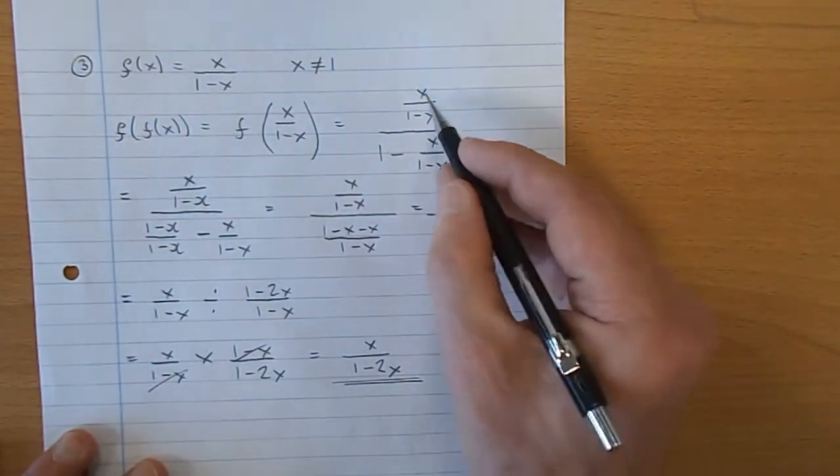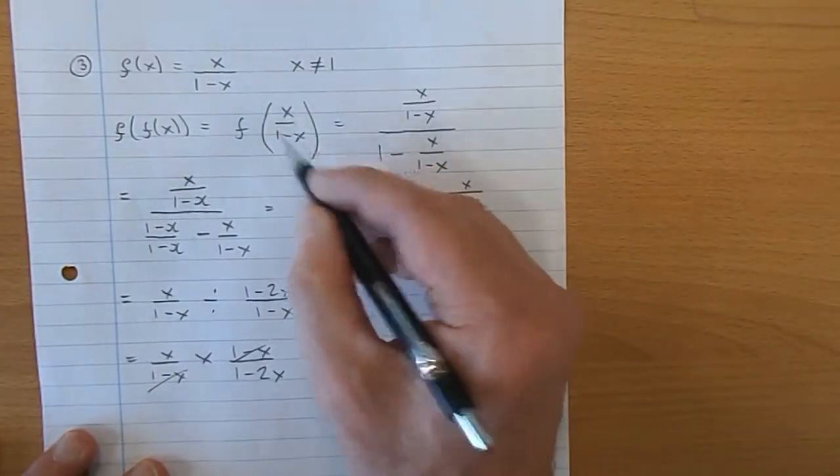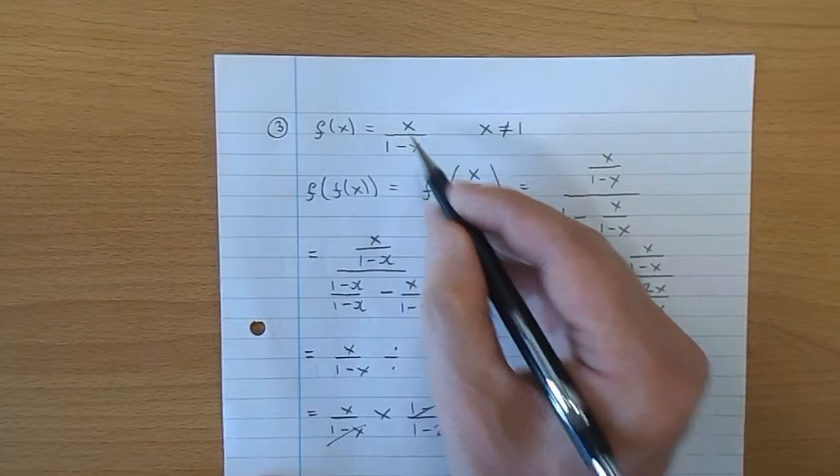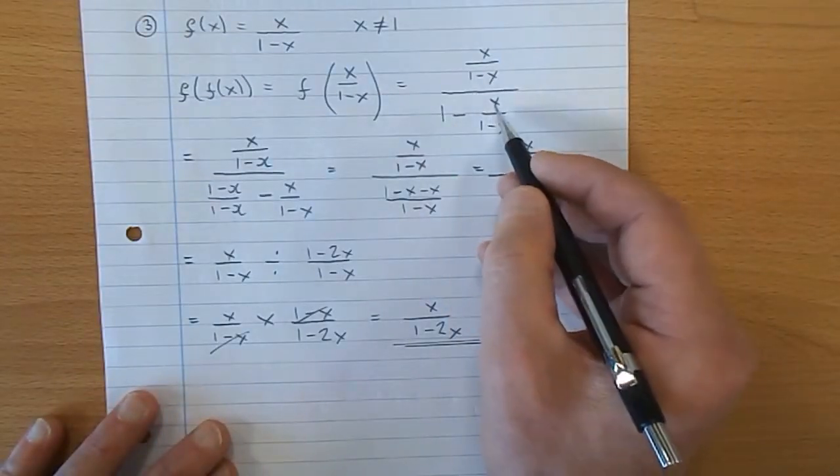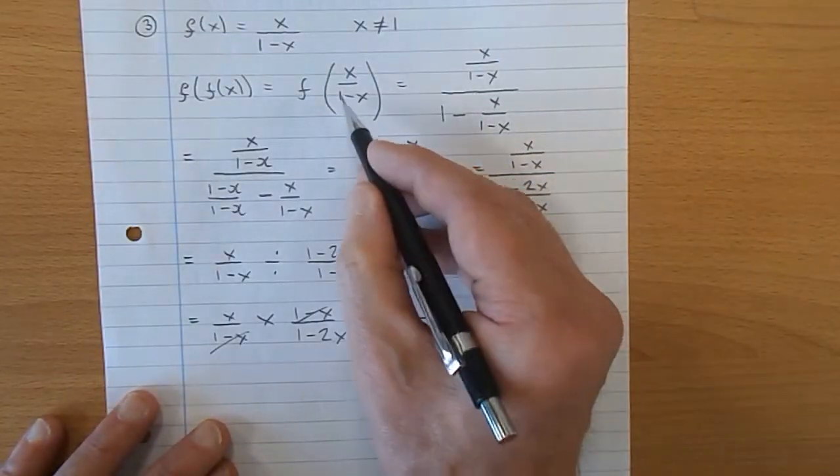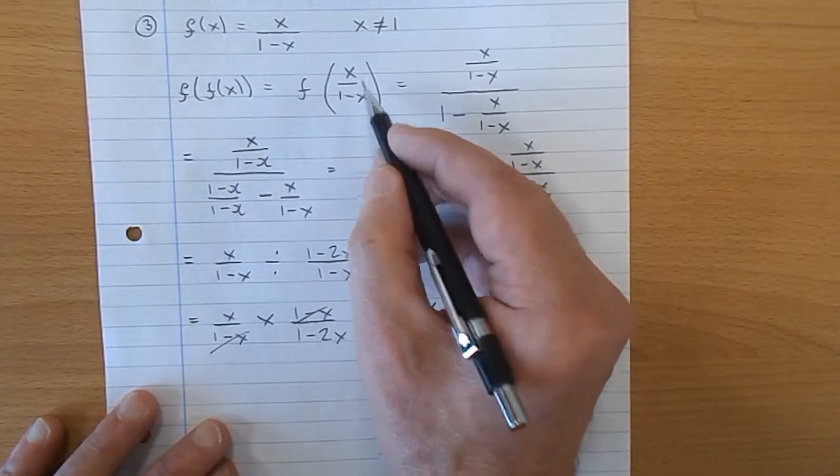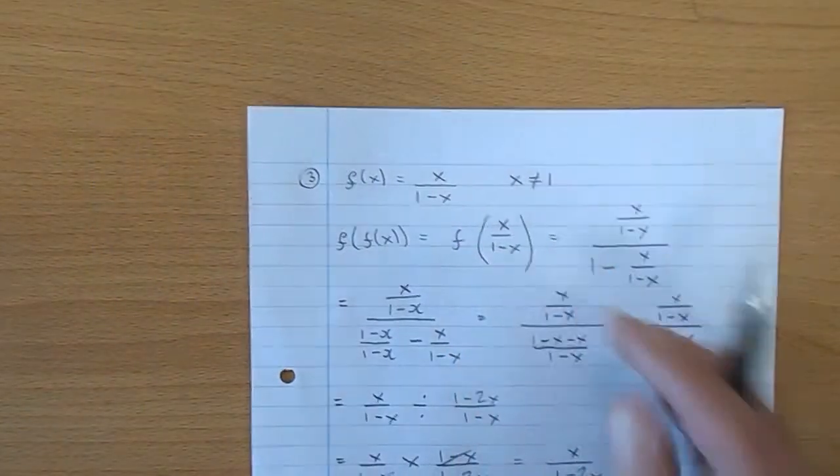Okay, so we have x over 1 take x, that's that function put there. Over 1 take x over 1 take x, 1 take, and that's we put that whole function there.